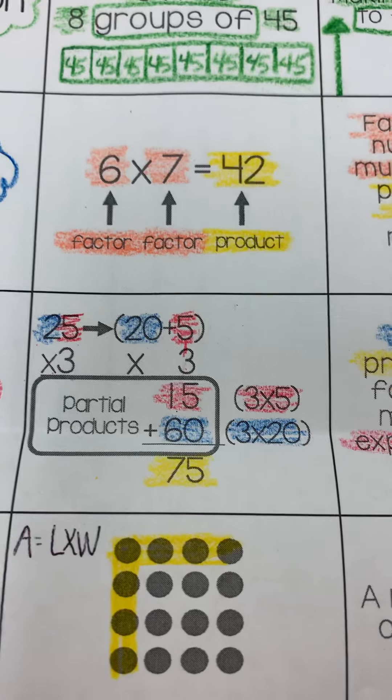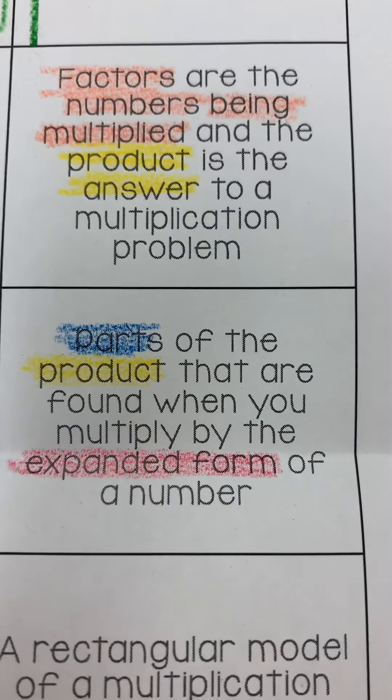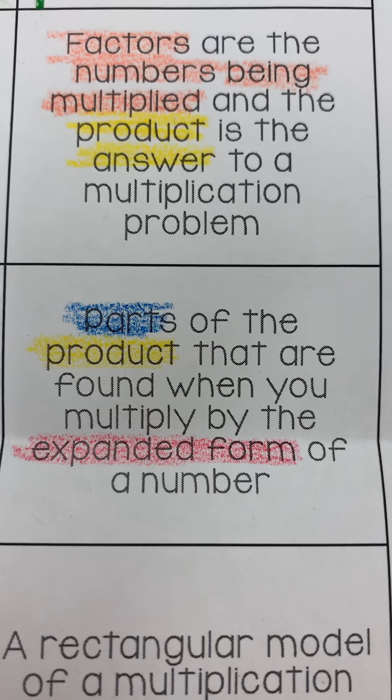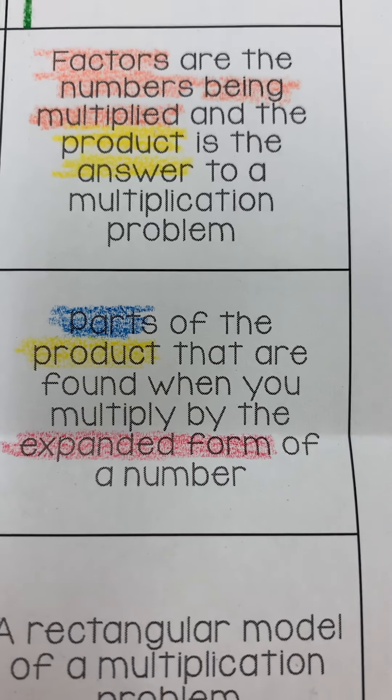So 25 times 3 is 75. Once again, partial product means the parts of the product that you found when you multiply by the expanded form of a number.